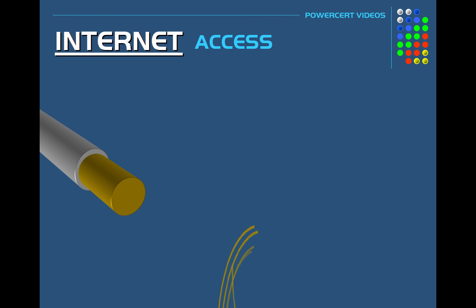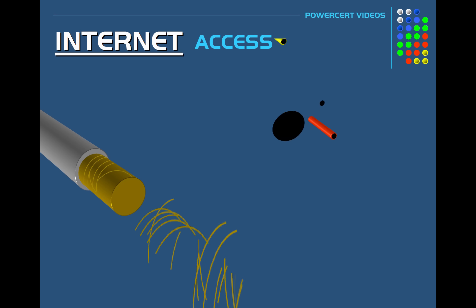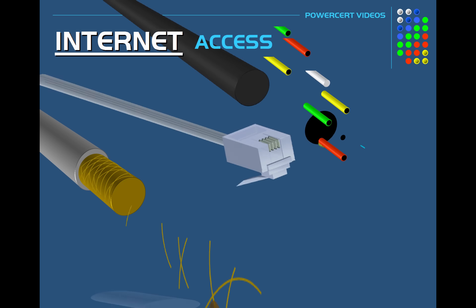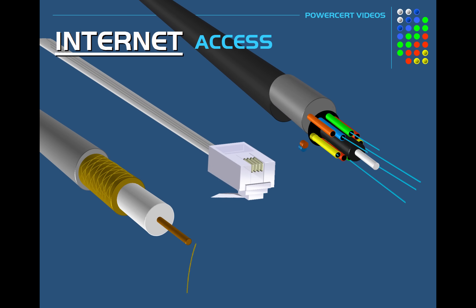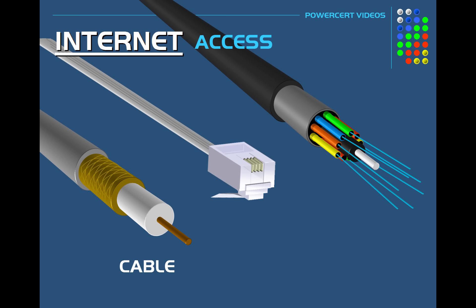Hello everyone. In this video we're going to talk about three different internet access technologies. We're going to discuss the difference between broadband cable, DSL, and fiber. So let's start with broadband cable.